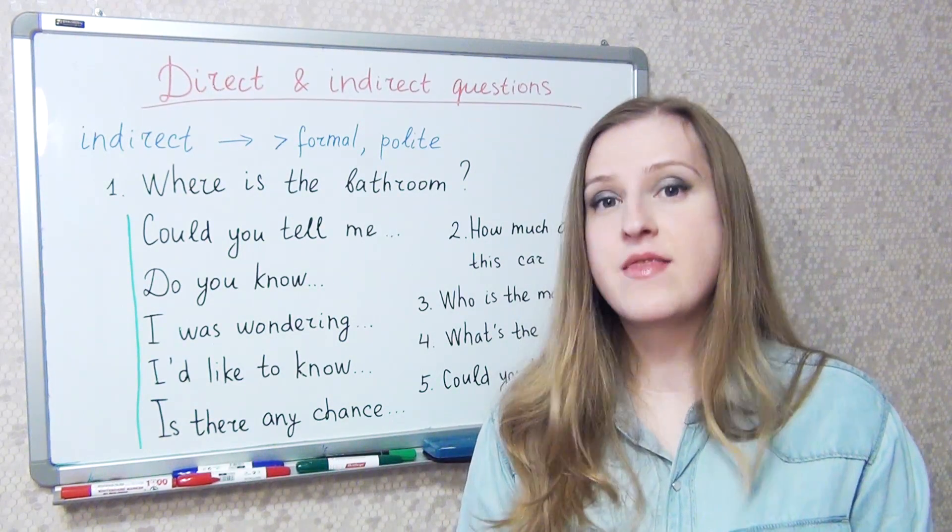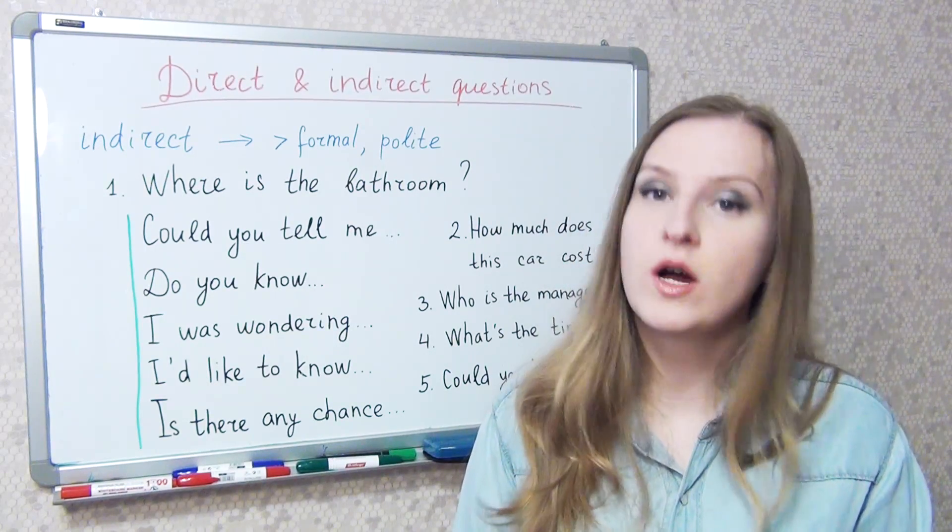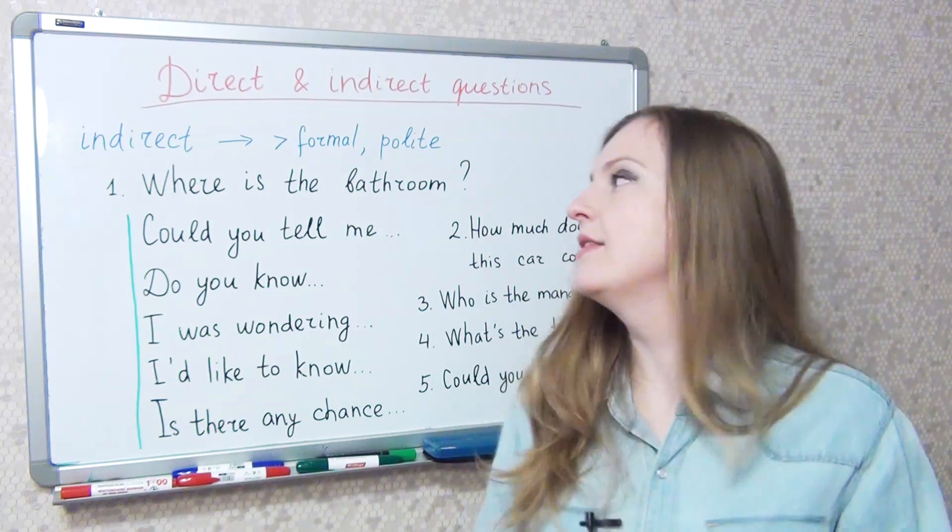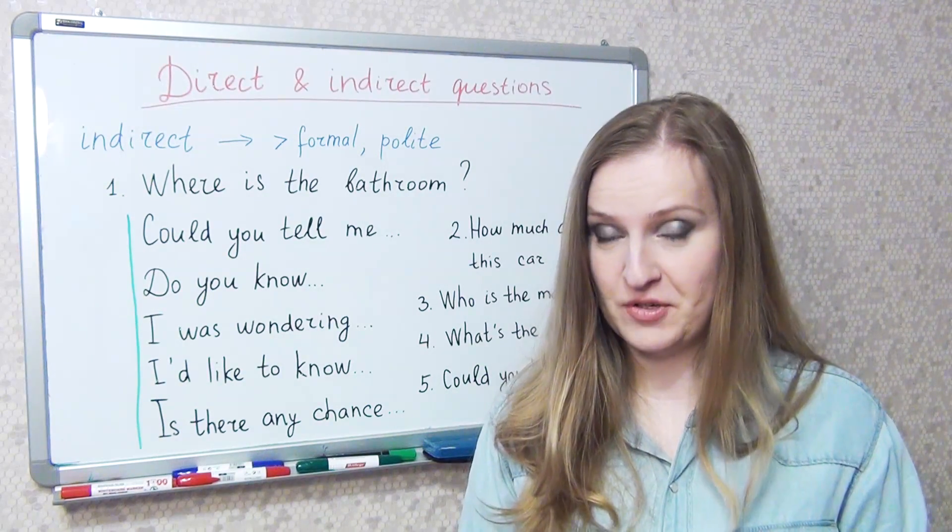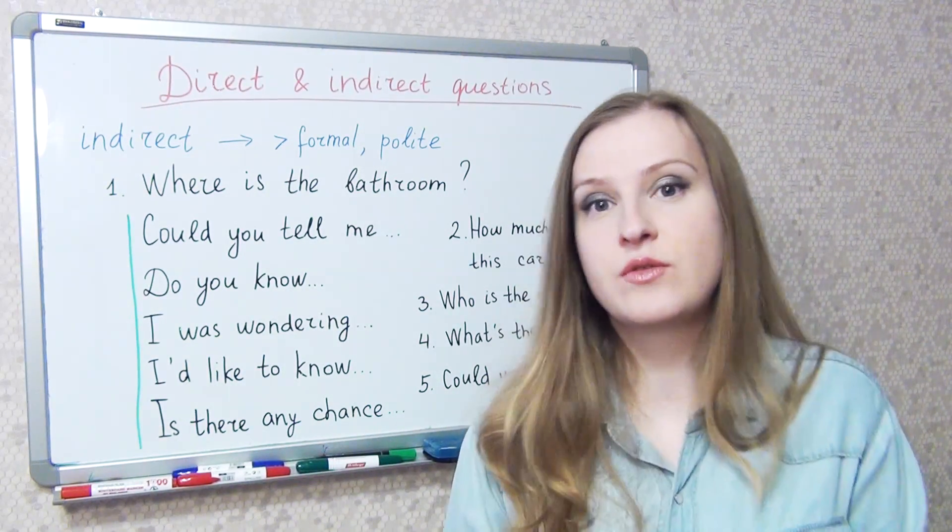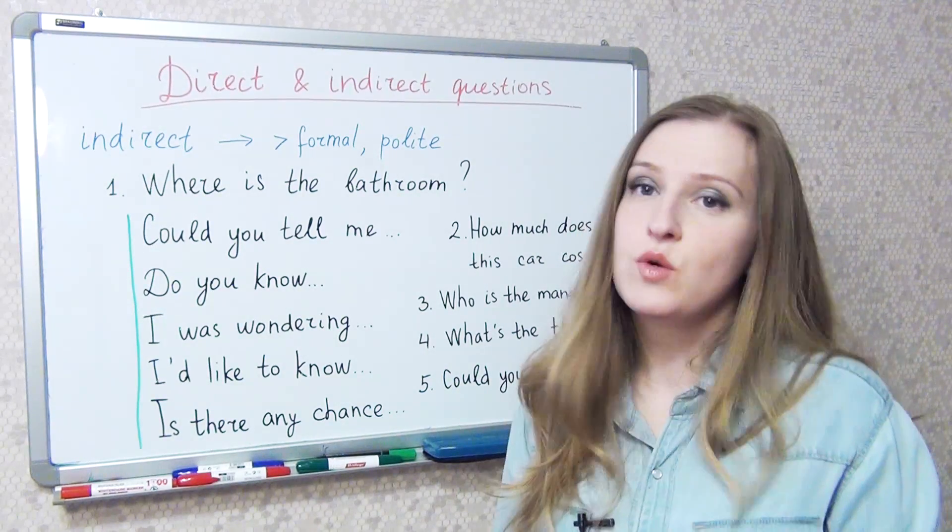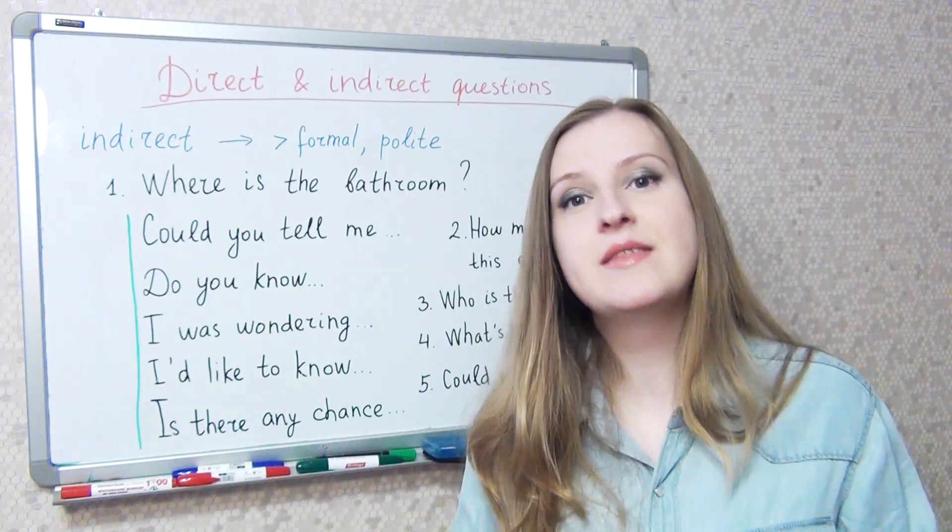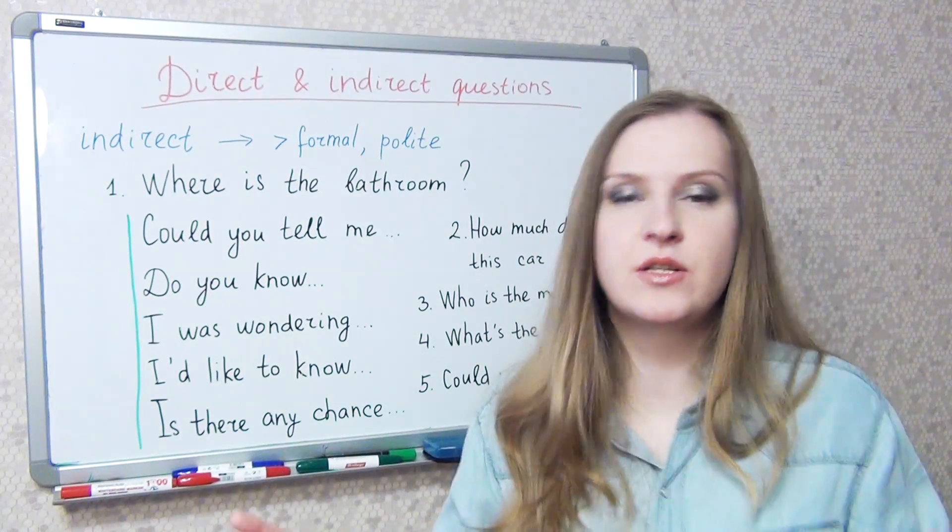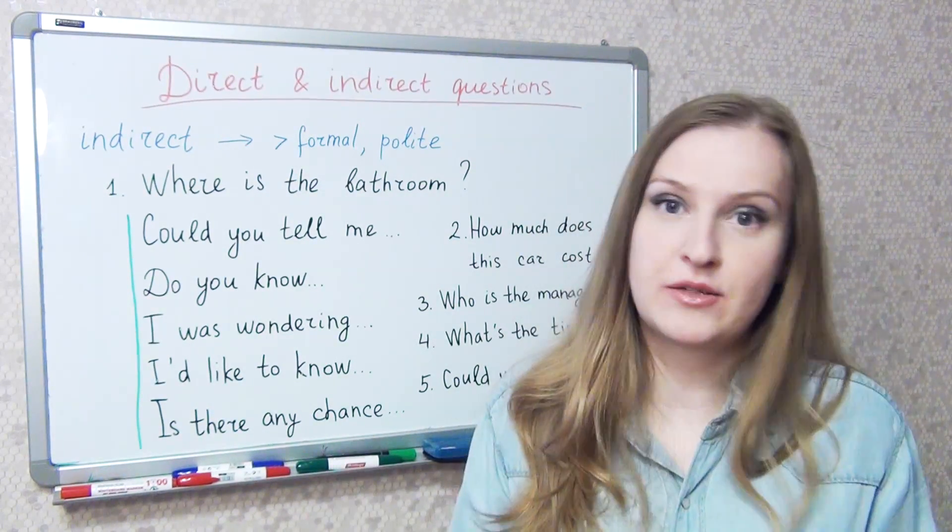However, do not forget that in some who and what questions, even in their direct form, there's no inversion. For example, what makes you so sad? I was wondering what makes you so sad? In this case, the word order in the indirect question will be absolutely the same as in the direct question.